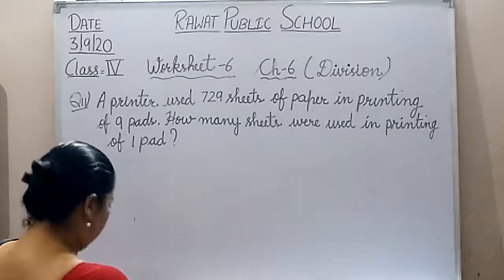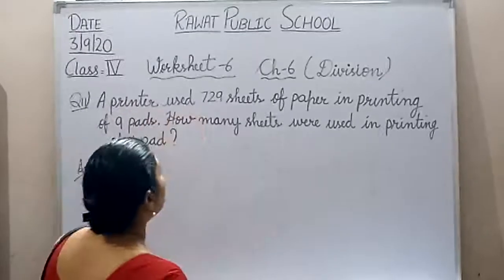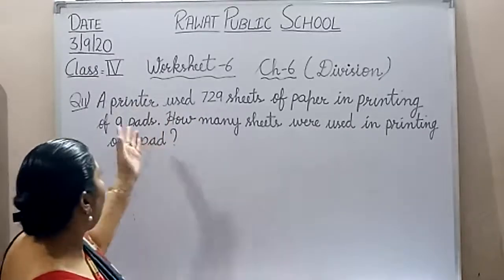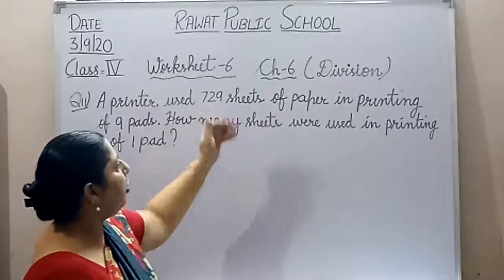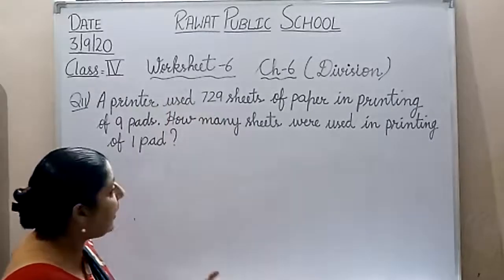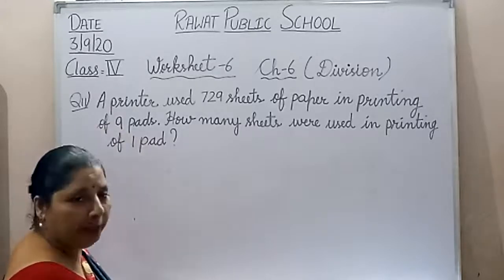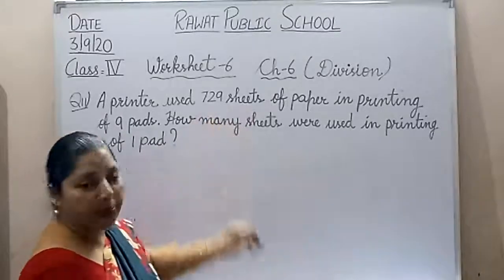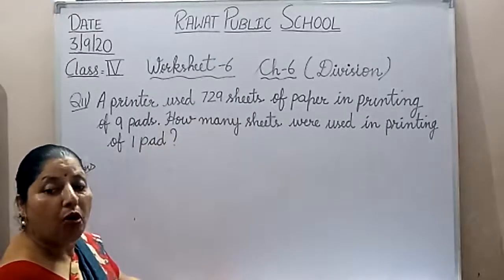Now let's start question number 11. Question number 11: a printer uses 729 sheets of paper in printing of nine pets. So to print nine pets, a printer used 729 sheets of paper. How many sheets were used in printing of one pet? We need to find how many sheets of paper will be used for one pet.